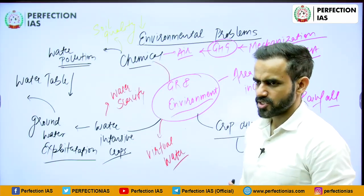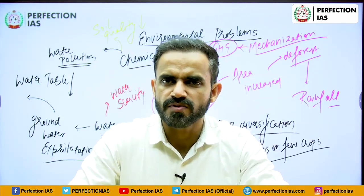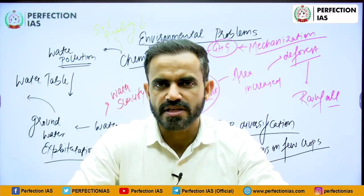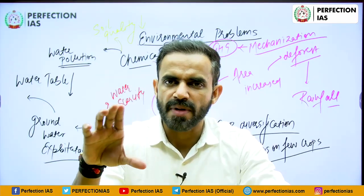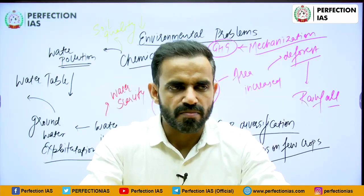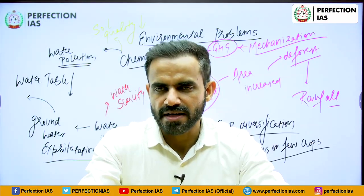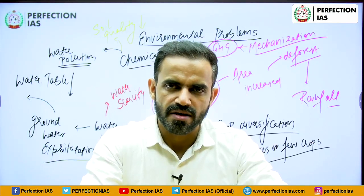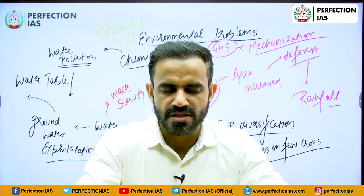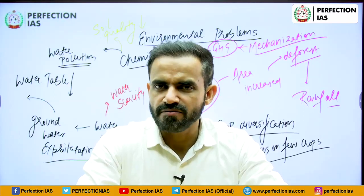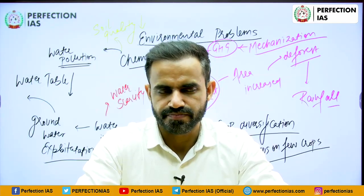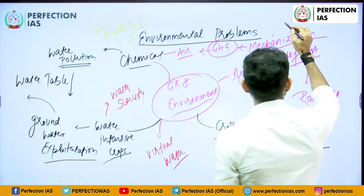Because of mechanization, there is another problem: stubble burning. Since harvesting is done by machines, there is crop residue — the roots or upper part of the crop are left behind. Farmers then try to clear their entire field using fire, leading to stubble burning. Right now in November–December, air pollution is quite severe in North India, specifically in areas of Delhi, Haryana, and Punjab — and mechanization is a key reason for this stubble burning.